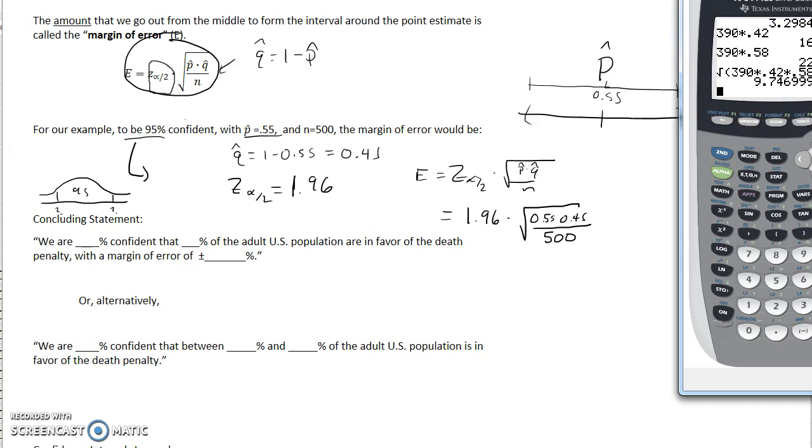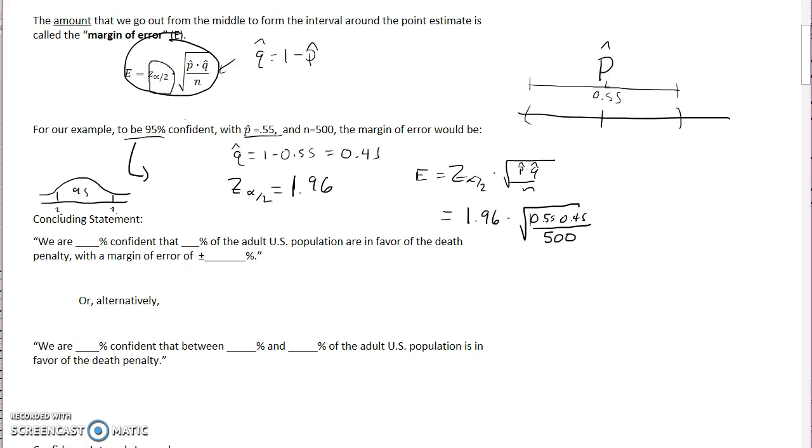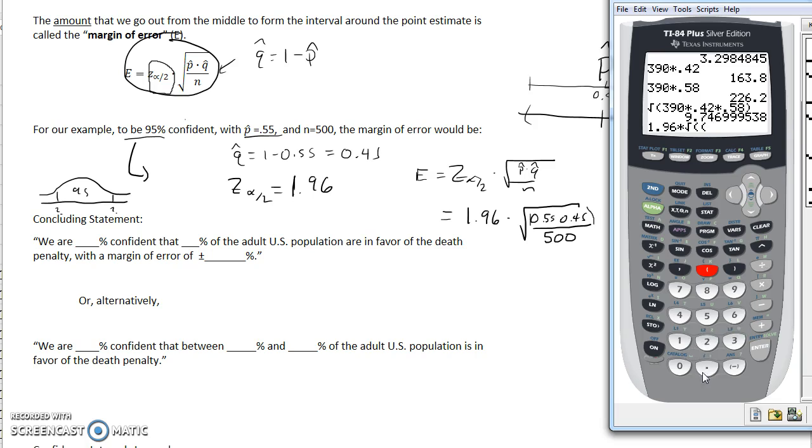All right, so we're now going to work this out. So it's going to be 1.96 times square root of, now be careful here. I need to set a set of parentheses because I need to multiply what's up into the top by a set of parentheses. So you got to think of this as kind of having a set of parentheses.